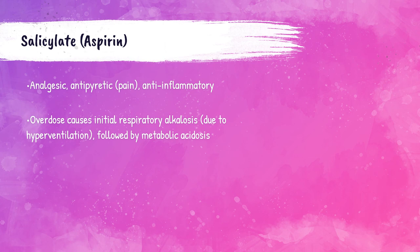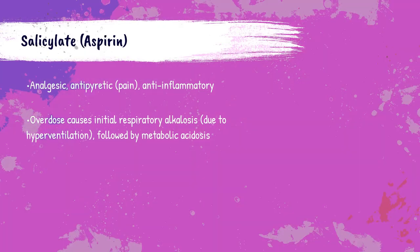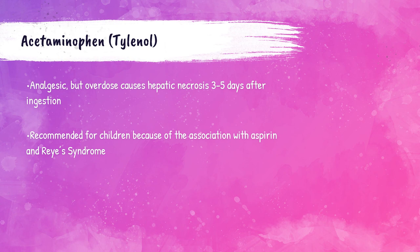Salicylate or aspirin is commonly used as an anti-inflammatory and pain medication. High levels of salicylate ingestion lead to imbalances in the acid-base balance, initially causing respiratory alkalosis due to hyperventilation, then metabolic acidosis. Aspirin is associated with Reye's syndrome in children — a rare disorder occurring after a viral infection that causes swelling in the liver and brain. Acetaminophen or Tylenol is a pain reliever; overdoses cause necrosis to the liver within a few days. Acetaminophen is recommended for pain relief in children due to salicylate's association with Reye's syndrome.